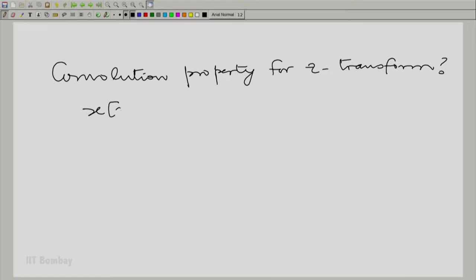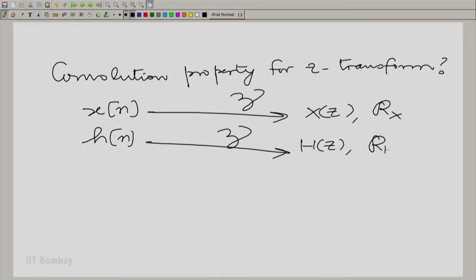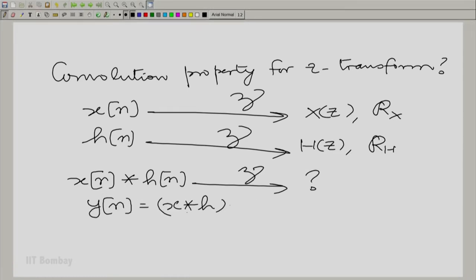Let X of n as usual have the Z transform given by capital X of Z with the region of convergence R sub x and the same holds for H of n. What is the region of convergence and what is the Z transform of the convolution? What would it be by expression? Let us give this convolution a name.